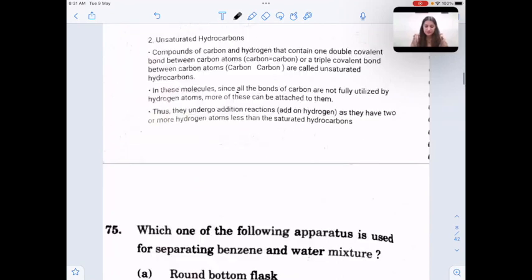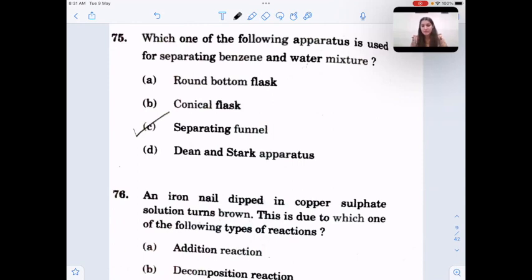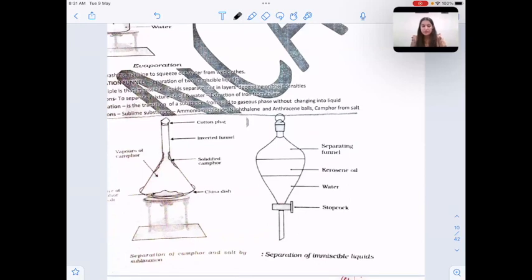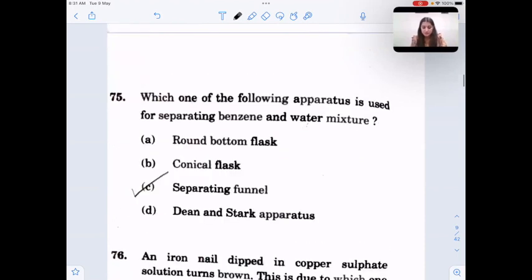Which one of the following apparatus is used for separating benzene and water mixture? This is separating funnel. Separating funnel is used for two immiscible liquids, benzene and water. They are immiscible liquids, so they both can be separated by using separating funnel.